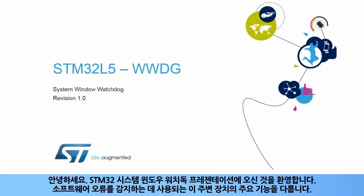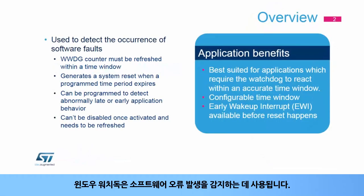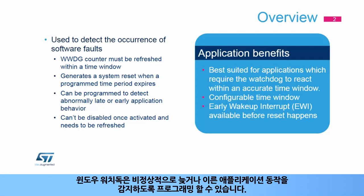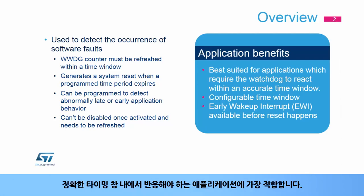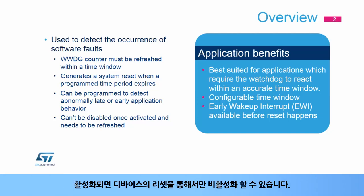Hello and welcome to this presentation of the STM32 system window watchdog. It will cover the main features of this peripheral used to detect software faults. The window watchdog is used to detect the occurrence of software faults and can be programmed to detect abnormally late or early application behavior. It is best suited for applications required to react within an accurate timing window. Once enabled, it can only be disabled by a device reset.